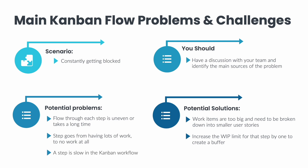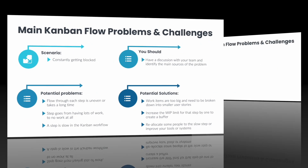If a step is slow in the Kanban workflow and the steps before and after are constantly being blocked, here are some things you can do. First, do a quick root cause analysis with the team and see what you can do to make things faster. You could, for example, reallocate some people to the slow step or improve your tools or systems. You can also adjust and lower the WIP limit for the other steps so that you can assign more people to the slow step.